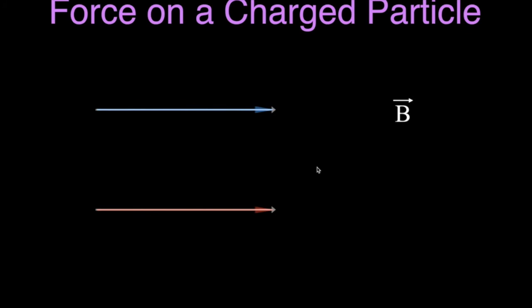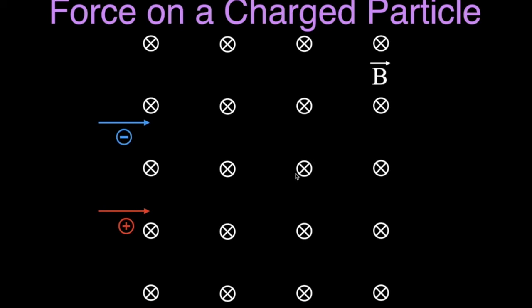Now we have examples where the X symbols indicate the magnetic field is moving into the page. For the positively charged particle, I point my thumb to the right and turn my hand so my fingers point into the page — my palm faces up, like I'm asking somebody to give me something. That means the force on that charged particle is up. For the negatively charged particle, I take my left hand, point my thumb to the right, with fingers out in front and palm facing down — the force on this charged particle is down.